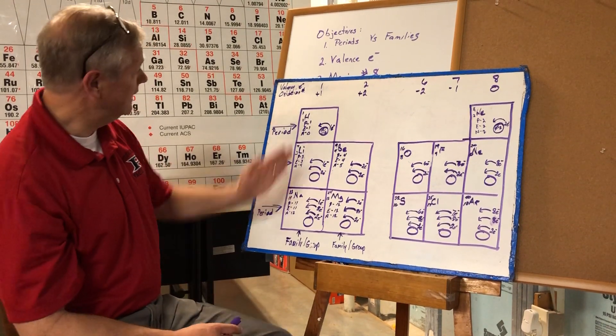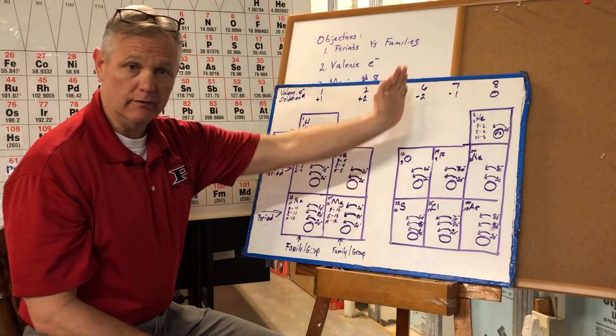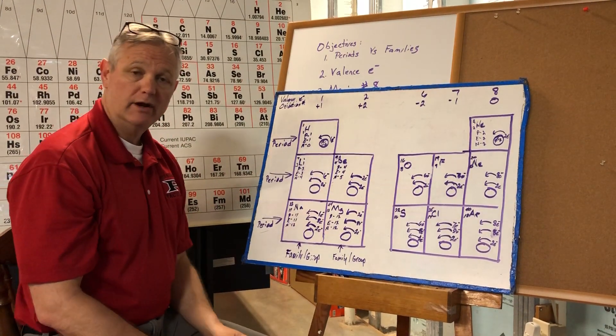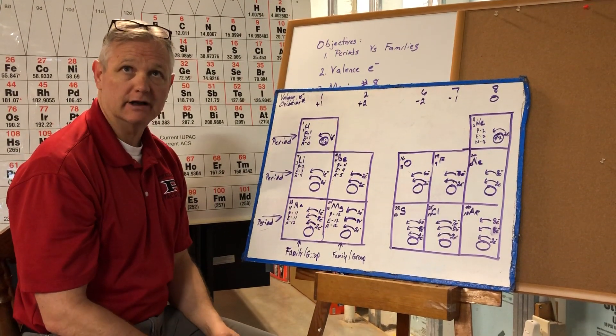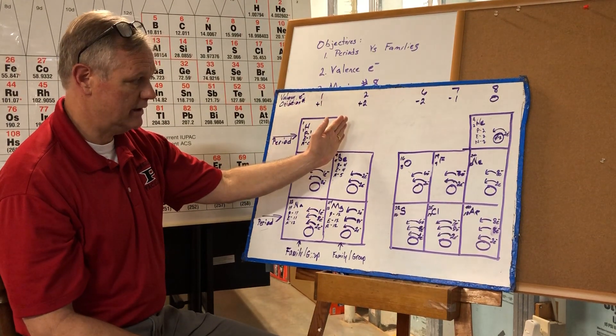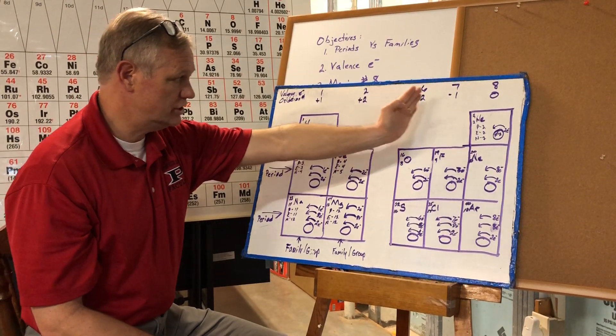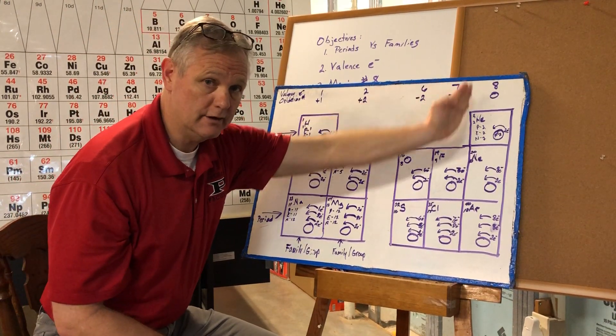What is a family? A family is going to run up and down on the periodic table. We've already went through and labeled our periodic table so you know the names: alkali, alkali earth metal, then over here the calcogens, the halogens, and the noble gases.